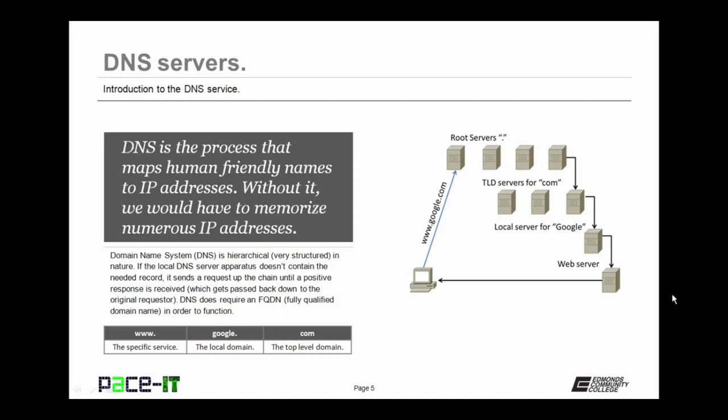DNS is the process that maps human-friendly names — such as www.google.com — to their appropriate IP addresses. Without DNS, we would have to memorize all of the IP addresses that we wished to visit. DNS stands for domain name system and it's very structured in nature. If the local DNS server apparatus doesn't contain the needed record, it sends the request up the DNS chain until a positive response is received back, then passes that response back down to the original requester.